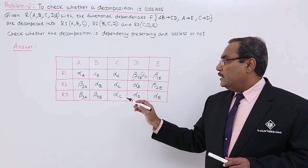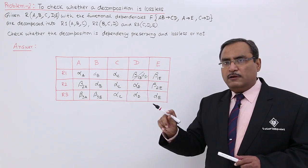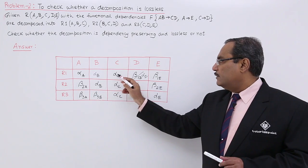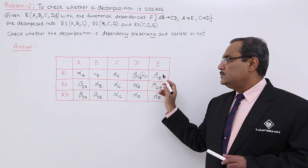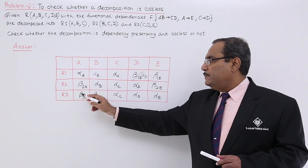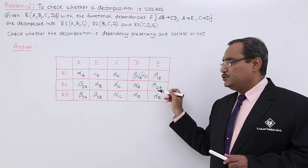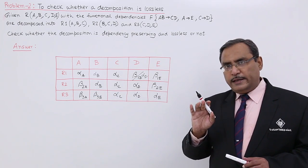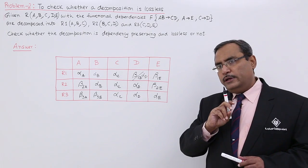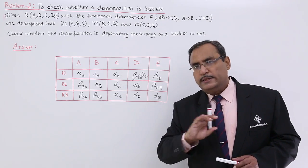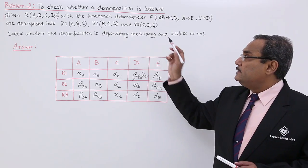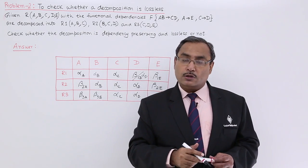Now can you find any row containing all alphas, alpha, alpha, alpha, here also alpha, but there is no alpha. Here it is starting with beta, starting with beta. I am not finding any row where only alpha values are there. That is why this decomposition is lossy.